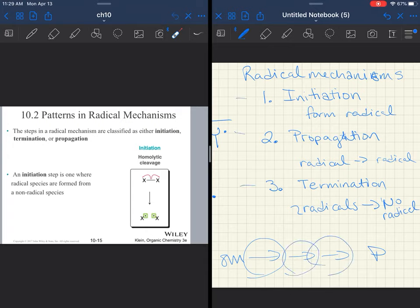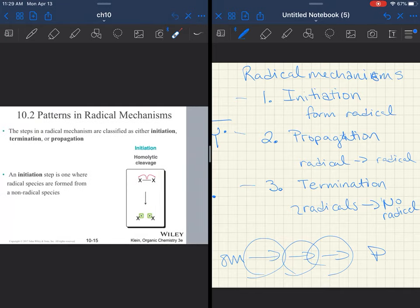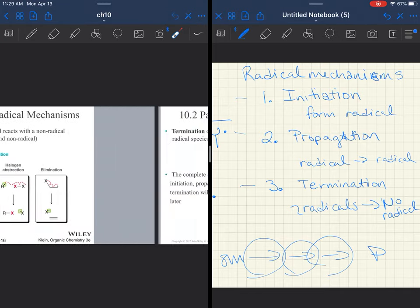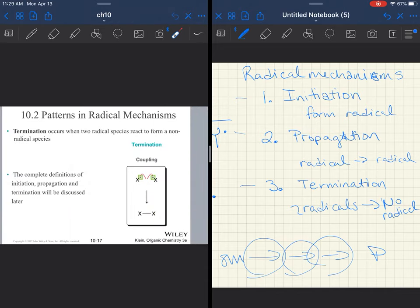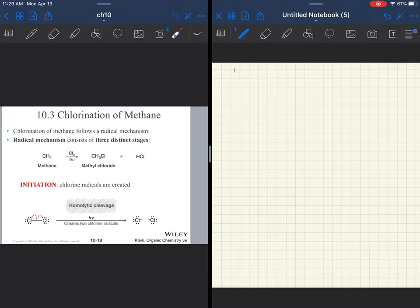So we are going to be grouping—this chapter is a little bit different in how we look at mechanisms. Instead of just starting at the beginning and moving forward until we get to the product, we are going to sort of look at these steps individually and see whether they fit into one, two, or three category. So the six steps that they looked at, it's showing you how they fit into initiation, propagation, and termination.